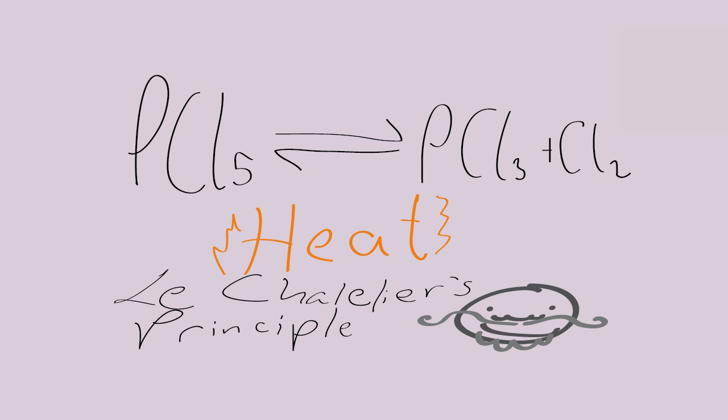In this reaction, the forward reaction is endothermic, so if the temperature is increased, it'll go towards PCl3 and Cl2. However, if there's a decrease in pressure, the reaction moves to the left and forms PCl5.